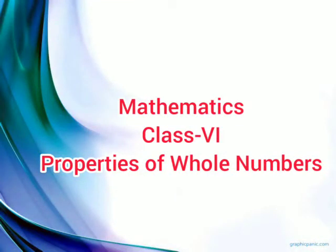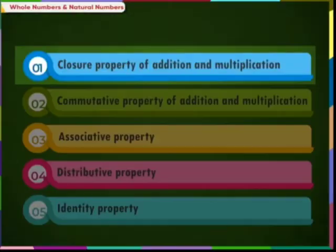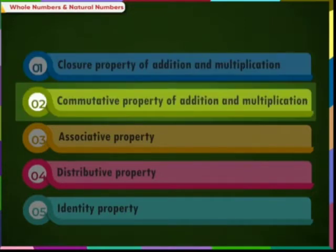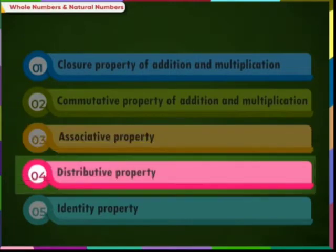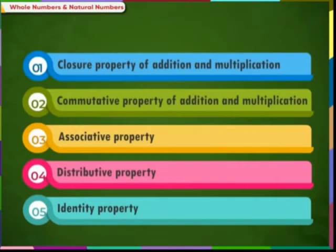Hello, our today's topic is properties of whole numbers. We are discussing 5 different properties of whole numbers: first is closure property of addition and multiplication, second is commutative property of addition and multiplication, third is associative property, fourth is distributive property, and fifth is identity property. Let us discuss these 5 properties one by one.